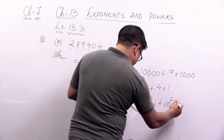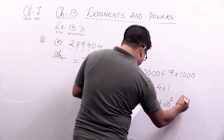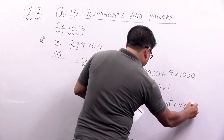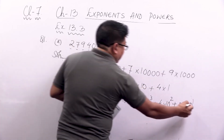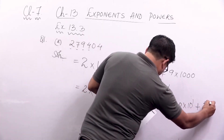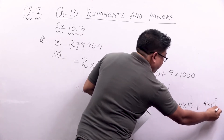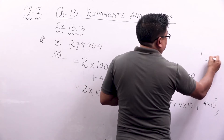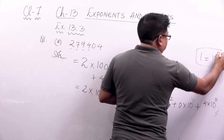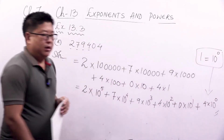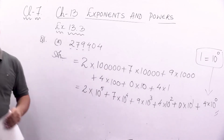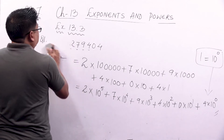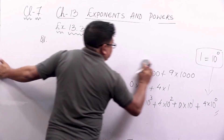And finally 4 into 10 to the power 0, which is 4 into 1, equals 4. So we can write it in that manner. With that, this question is over. Let's move on to the next question.